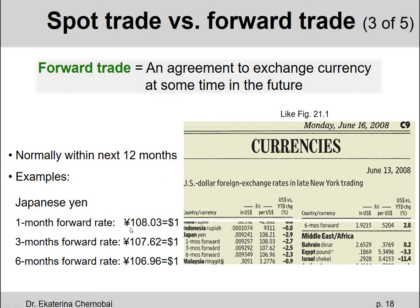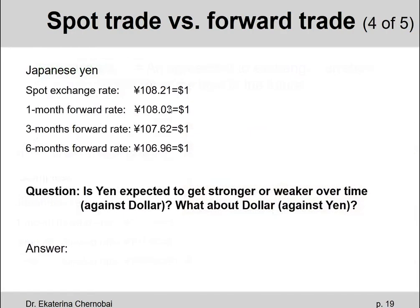Whether you benefit from it or lose from it depends on what the actual exchange rate will be in one month — that's a different question. The three-month forward rate is 107.62 Yen per dollar, and the six-month forward rate is 106.96 Yen per one dollar. The spot exchange rate is 108.21 Yen per one dollar.